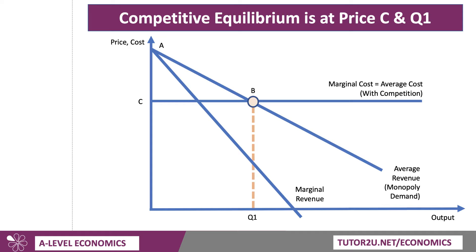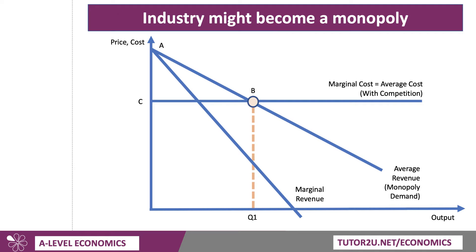That gives us a level of consumer surplus A, B, C. Now it could be the case that the industry might become — not necessarily overnight, but over time — a monopoly. So let's contrast the situation here in the market with the price at C in a competitive situation, with what happens if one firm takes over the market. And because it's consolidated, they can now achieve some significant economies of scale.